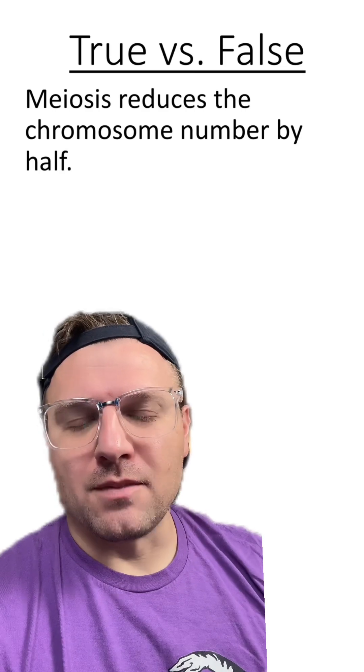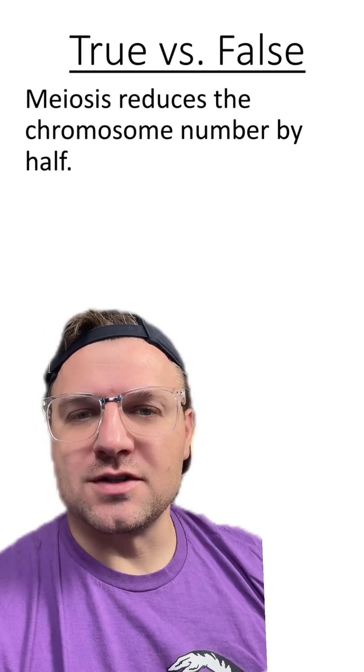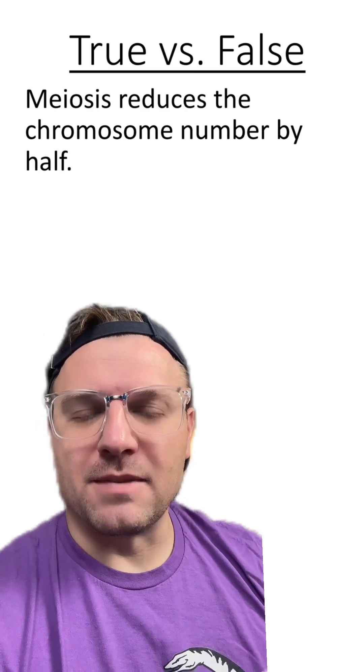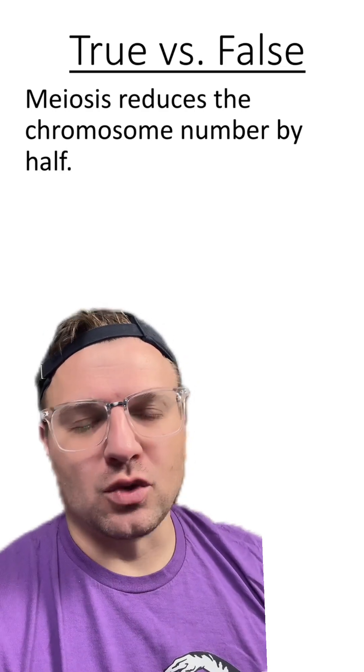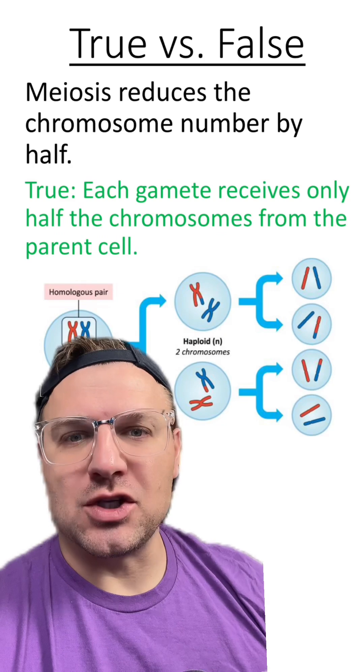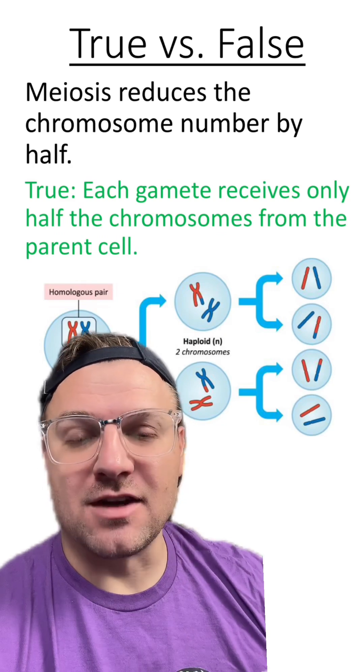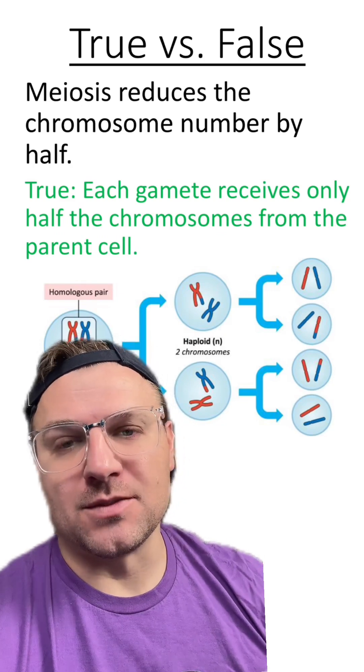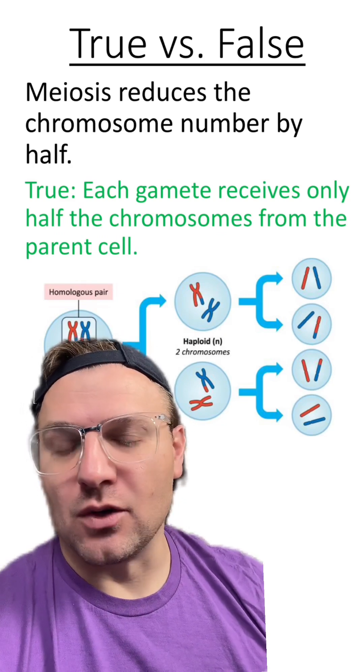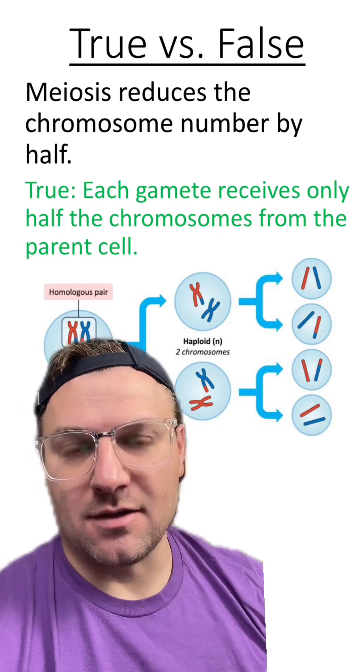And here's the last one: meiosis reduces the chromosome number by half. Is this true or false? This is true. Each gamete should have half the number of chromosomes as the parent or starting cell.